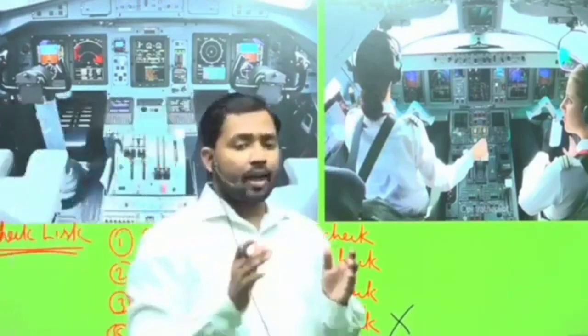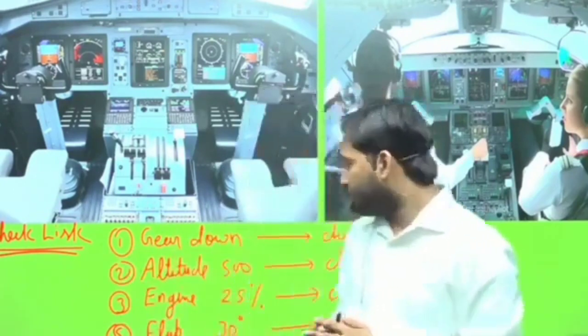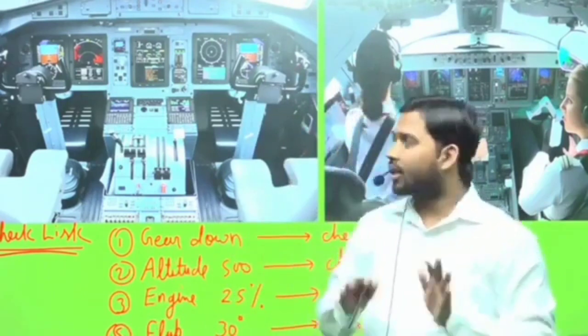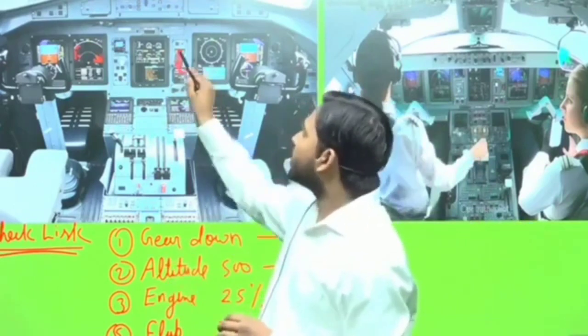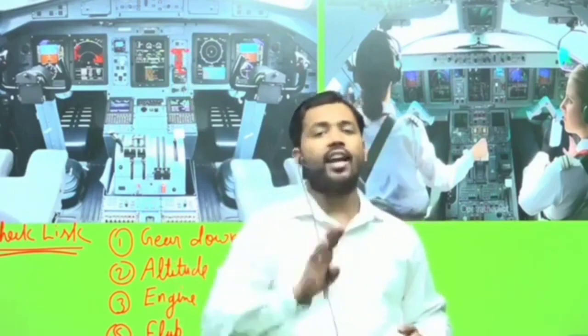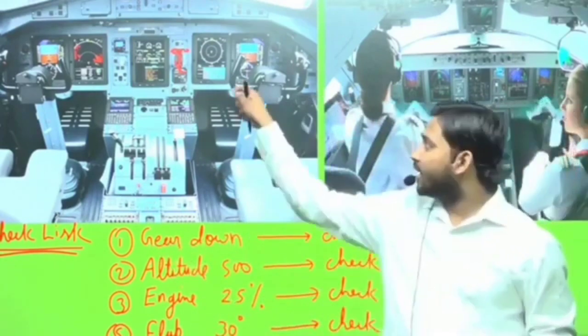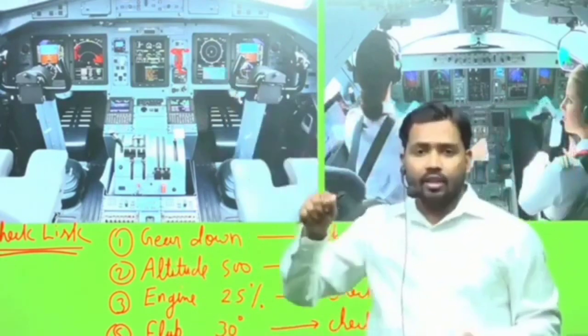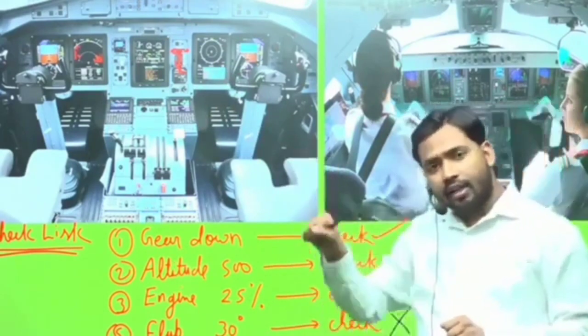When coming in to land, the captain has to call out items in sequence. The first officer has to execute those commands. For example, to lower the landing gear: the captain says 'landing gear down,' so the first officer puts the landing gear down. When it is down, three lights will illuminate — because there are two main gear trucks and one nose gear. When all three lights are confirmed, the first officer says 'check,' meaning the task has been completed.